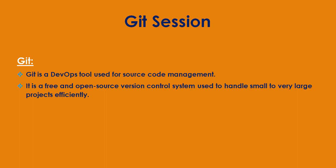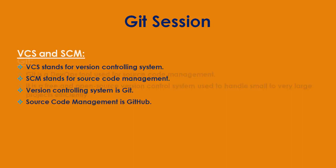This is the first part of the DevOps series on Git. We will learn what is a version controlling system (VCS) and source code management (SCM). Git is a DevOps tool used for source code management. It is a free and open source version controlling system used to handle small to very large projects efficiently.